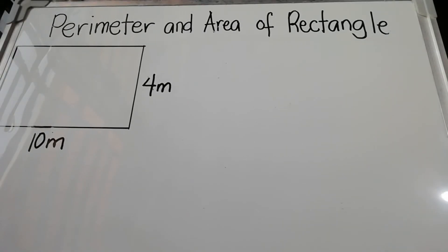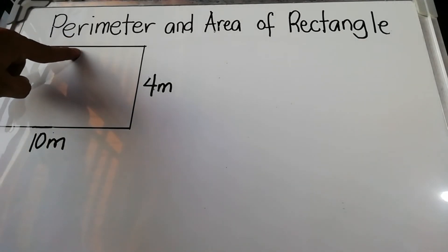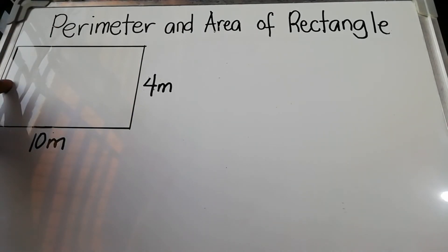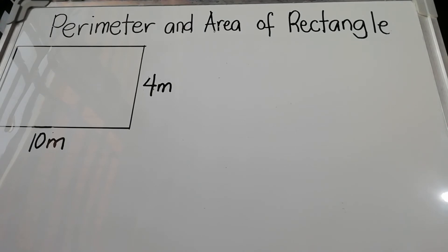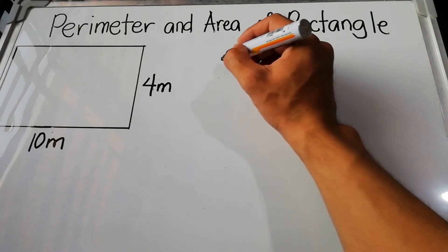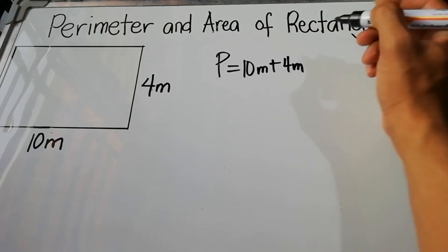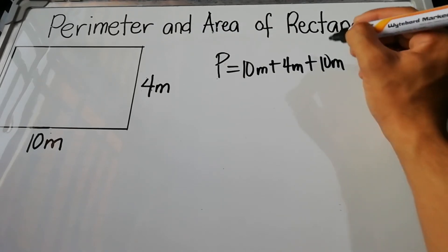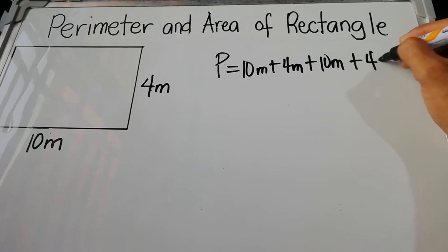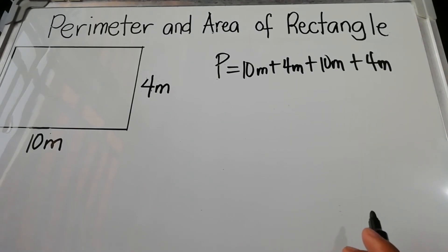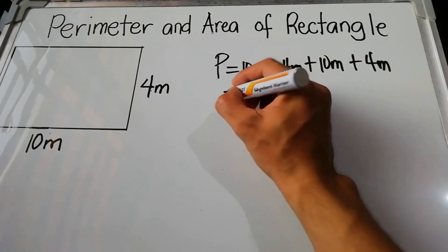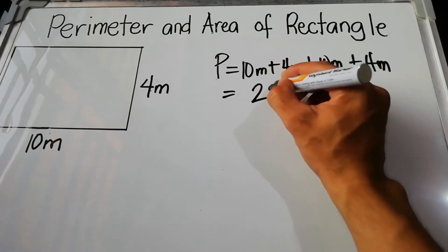For another example to reinforce the topic, we have measurements of 10 meters for length and 4 meters for width. As you can see, without writing the other measurements, we know the opposite sides are equal: 10 meters and 4 meters. To find the perimeter, add all sides: 10 + 4 + 10 + 4 = 28 meters.